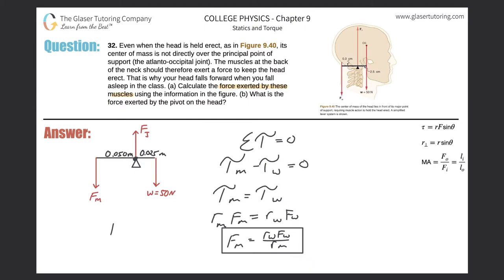So now all we have to do is plug in the values. So here we have R sub w is the lever arm of the weight. So that's going to be 0.025 multiplied by the weight of that head, which is 50 newtons. That's all divided by the lever arm for the muscle. So 0.050. Plugging this all in, 0.025 times 50 divided by 0.05. And what do we get? We get a value of 25. So 25 newtons.